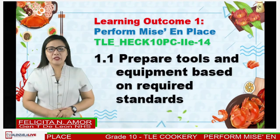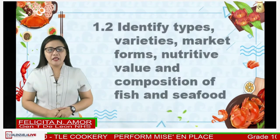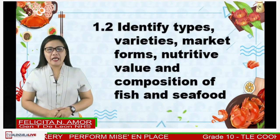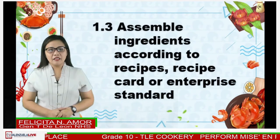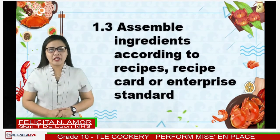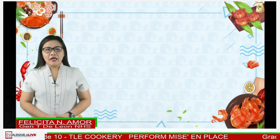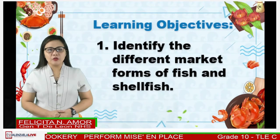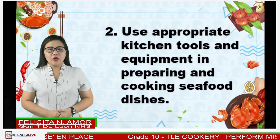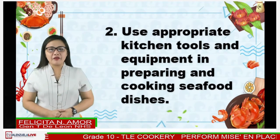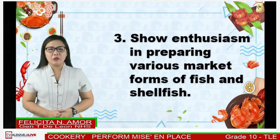Our learning outcome number one is to perform Mise en Place with three sub-skills: 1.1 Prepare tools and equipment based on required standards. 1.2 Identify types, varieties, market forms, nutritive value, and composition of fish and seafood. 1.3 Assemble ingredients according to recipes, recipe card, or enterprise standards. At the end of our discussion, you should be able to: 1. Identify the different market forms of fish and shellfish. 2. Use appropriate kitchen tools and equipment in preparing and cooking seafood dishes. 3. Show enthusiasm in preparing various market forms of fish and shellfish.